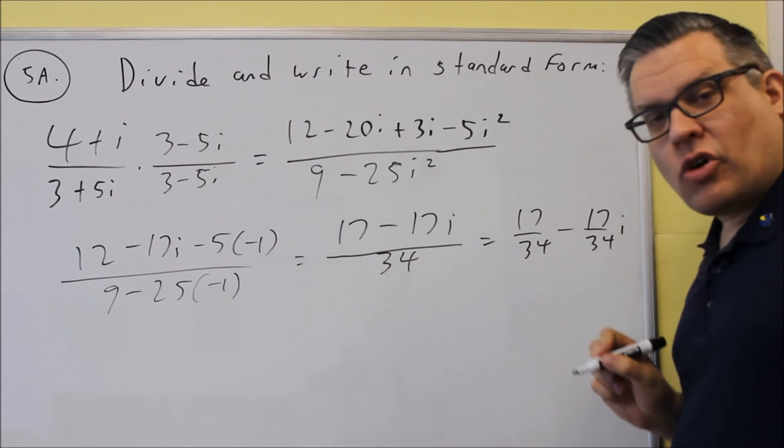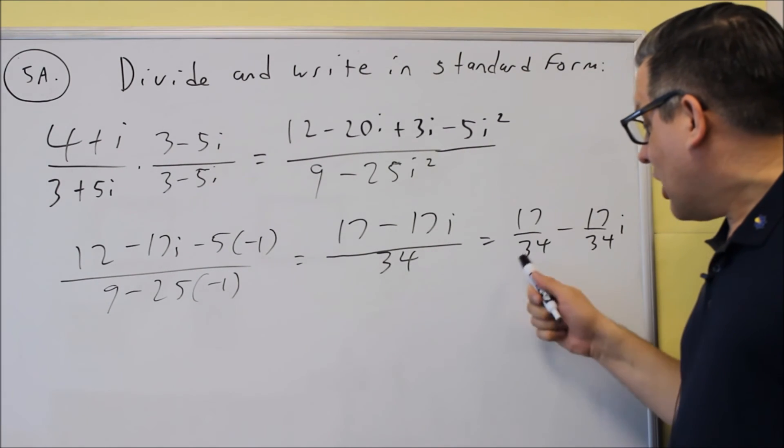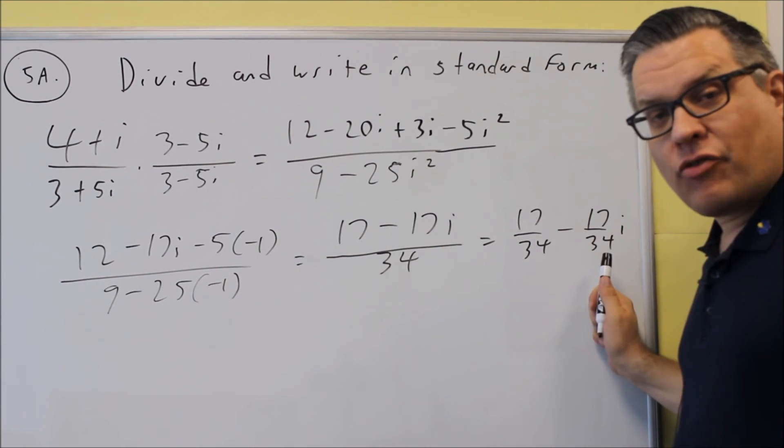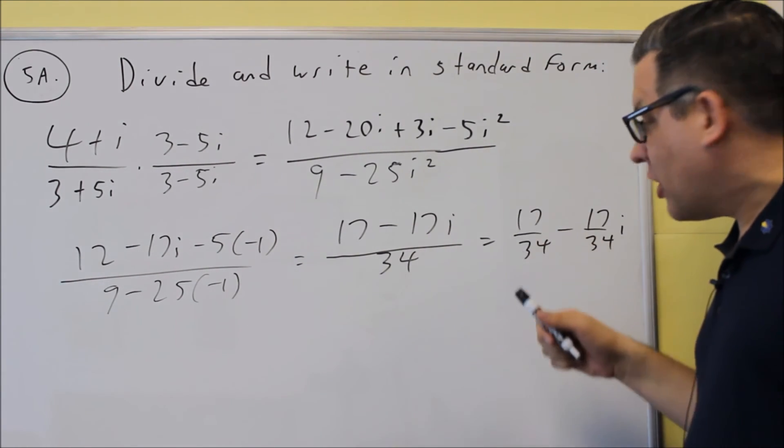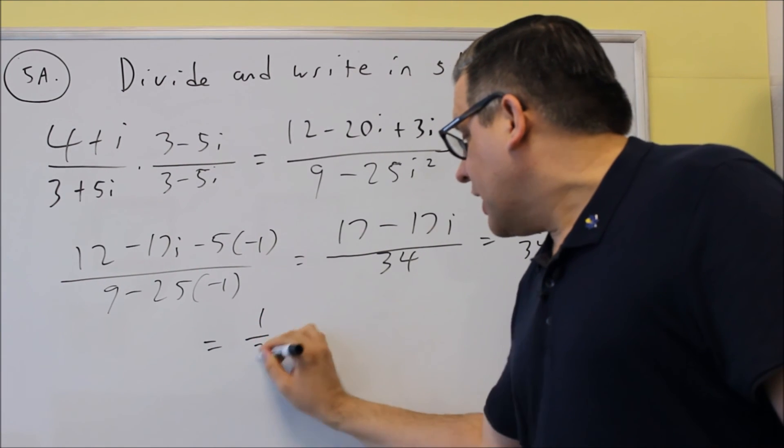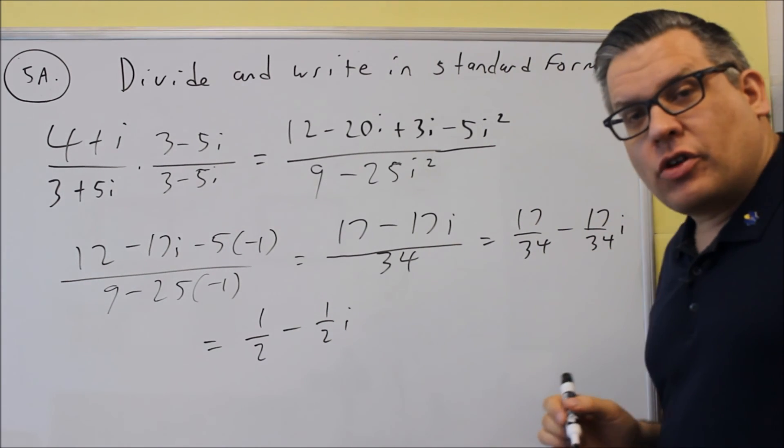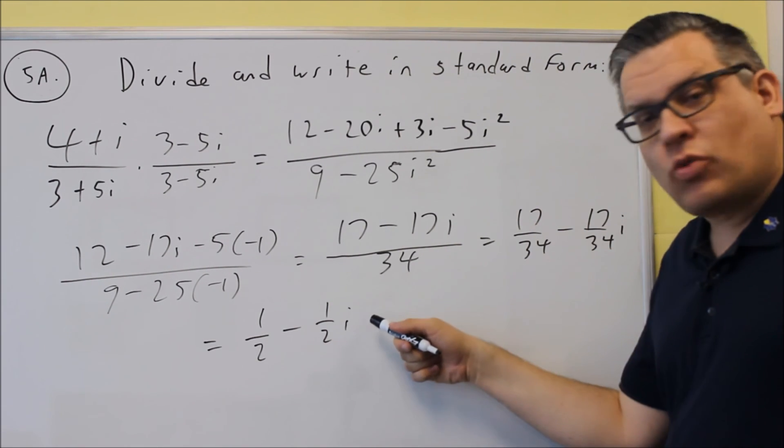Now this just so happens you can reduce it. You may or may not be able to reduce it on the actual test. If it can't be reduced, then you leave your answer in that form. If it can be reduced, you do want to take it down that extra step. So for this, that's a 1 half. So when I simplify 17 over 34 for each, I get 1 half minus 1 half i.